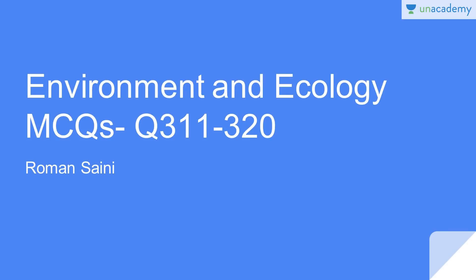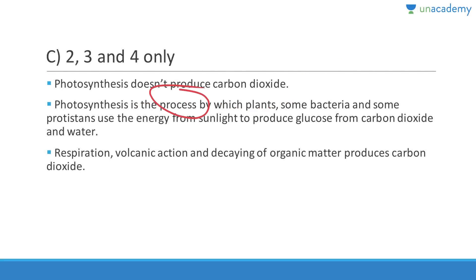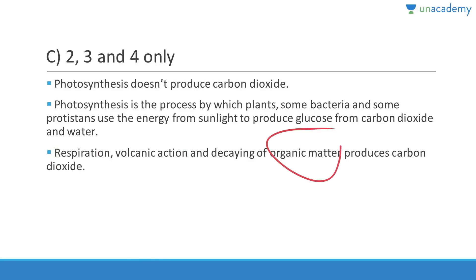Question 311: Which processes add carbon dioxide into the atmosphere? Photosynthesis does NOT produce carbon dioxide — it takes CO2 from the atmosphere and converts it into carbohydrates. Since statement 1 is wrong, the answer is C (2,3,4): respiration, volcanic action, and decay of dead organic matter all add carbon dioxide into the atmosphere.